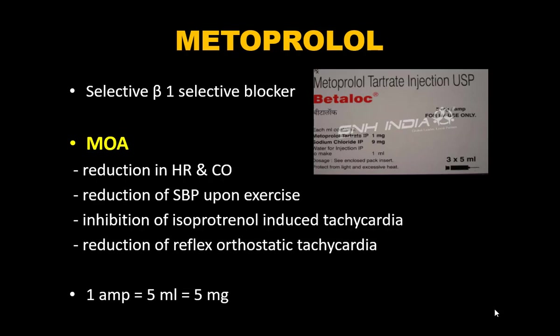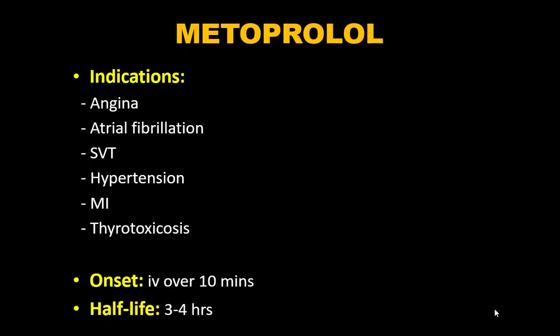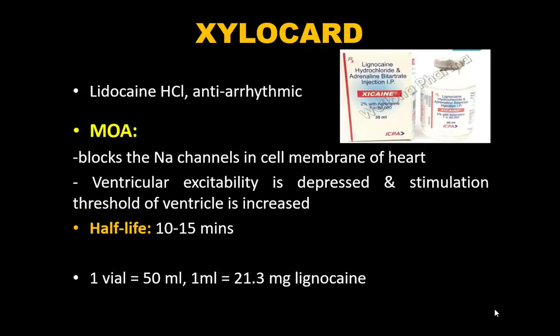Metoprolol is a selective beta-1 blocker. Mechanism: reduces heart rate and cardiac output, reduces systolic blood pressure, inhibits isoproterenol-induced tachycardia, and reduces reflex orthostatic tachycardia. One ampoule: 5 mL = 5 mg. Indications: angina, atrial fibrillation, SVT, hypertension, myocardial infarction, and thyrotoxicosis. Onset: 5–10 minutes; half-life: 3–4 hours.